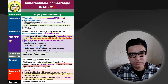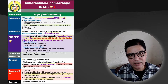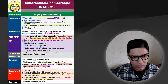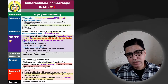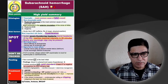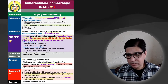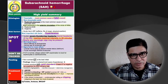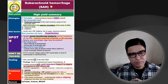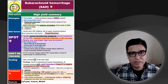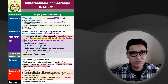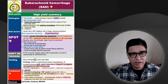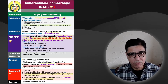The headache typically reaches maximum intensity within an hour — within 60 minutes. It is not something that develops over hours or weeks; it develops over minutes to hours. Neurological signs can also be present: neck stiffness, photophobia, cranial nerve palsies due to pressure, focal neurological deficits like hemiparesis, speech defects, or even seizures. There is a whole myriad of neurological signs that can present, but the most important symptom remains severe headache developing over minutes to hours.